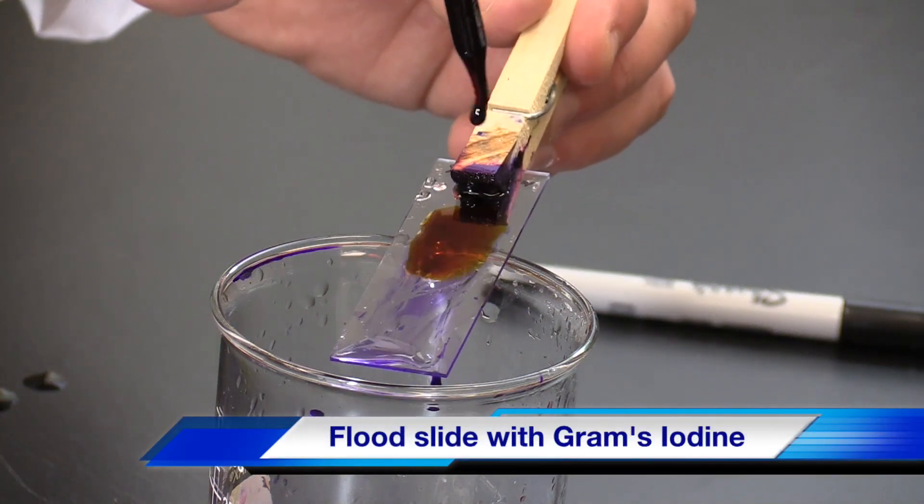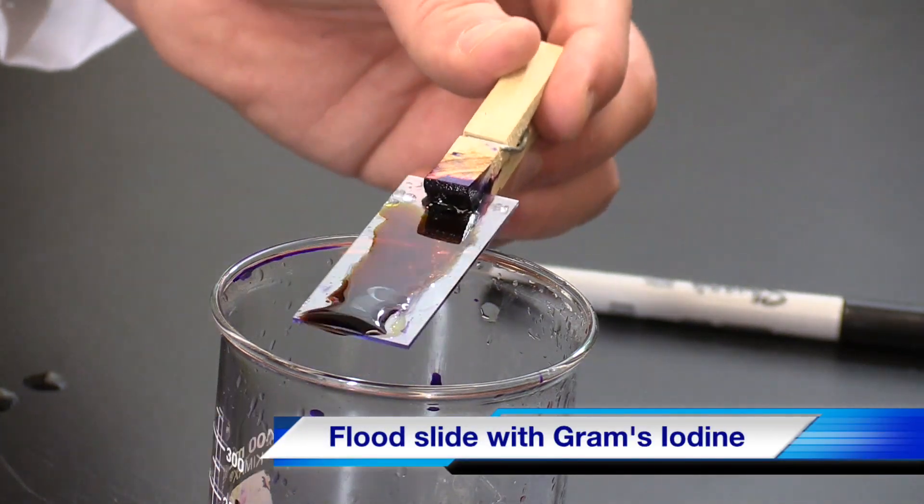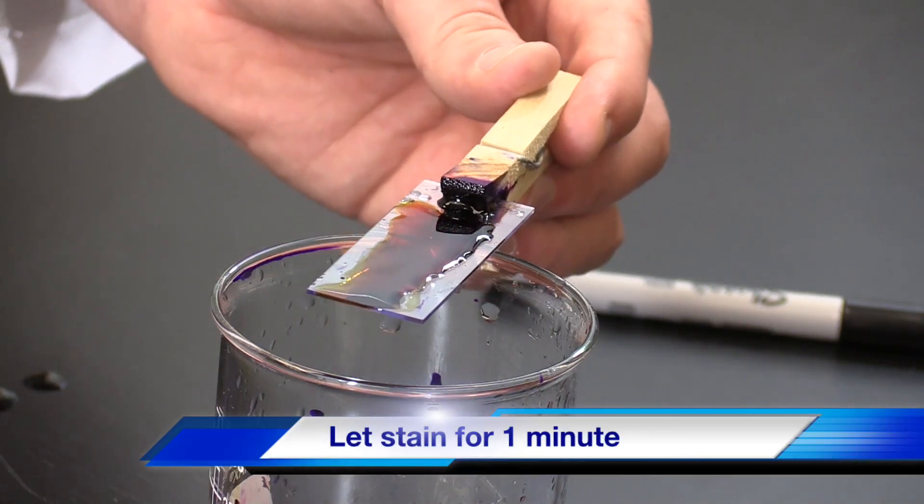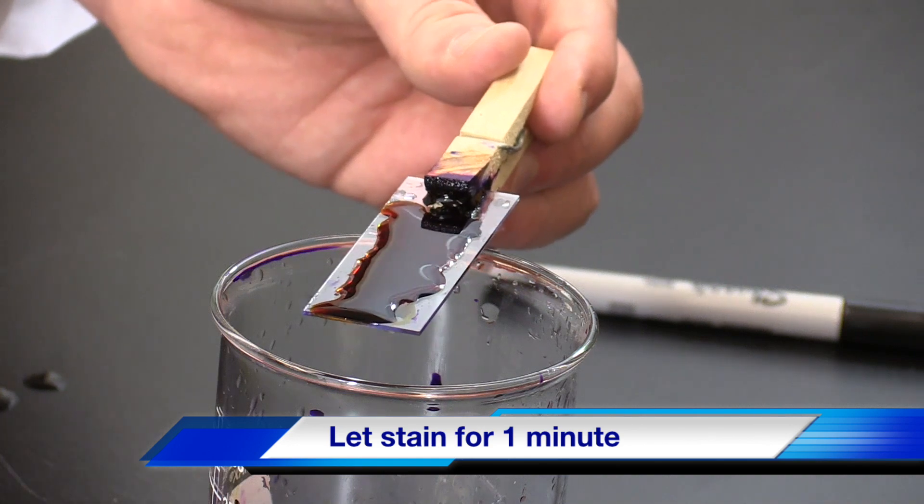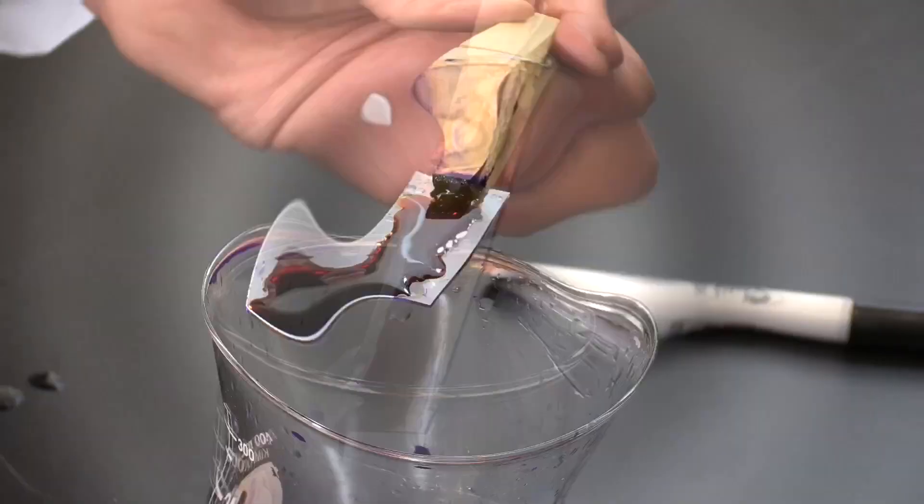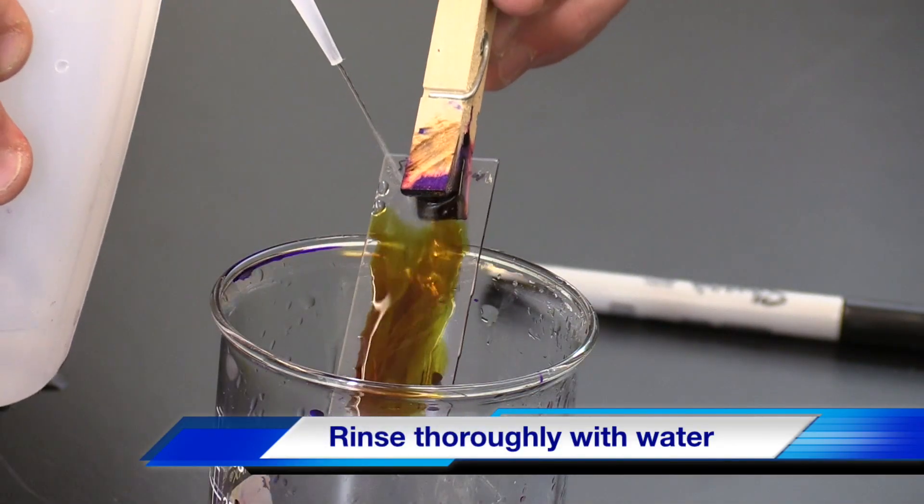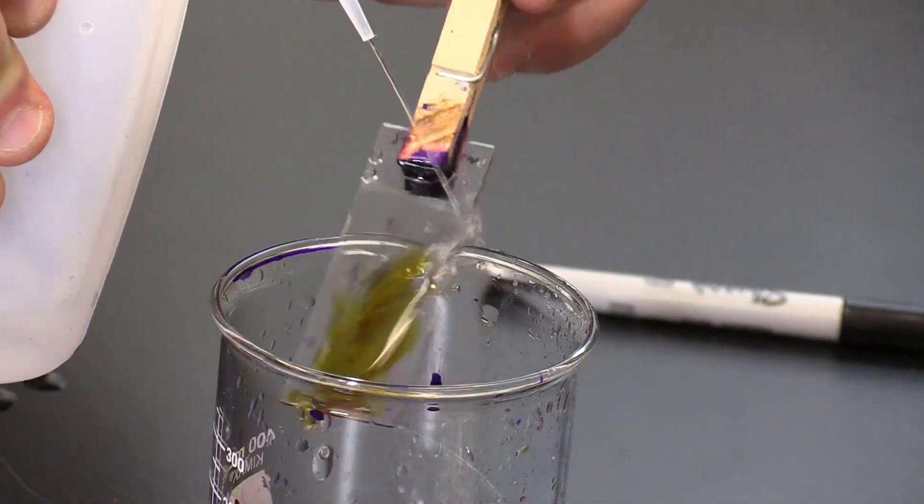Flood the slide with Grams Iodine to cover the bacterial smear and allow to stain for one minute. Rinse the Grams Iodine away with water until the water running off the slide is clear.